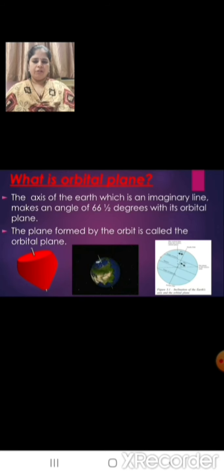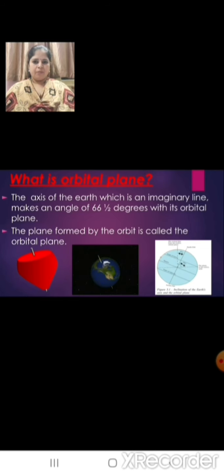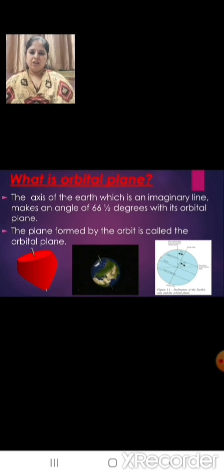Now let us see what is orbital plane. Here you can see an example of a top. We know that the earth rotates like a spinning top. The top has an iron rod in the center which helps it to spin, but the earth does not have a rod in the middle — it is just an imaginary line. So the axis of the earth, which is an imaginary line, makes an angle of 66.5 degrees with its orbital plane. The plane formed by the orbit is called the orbital plane.